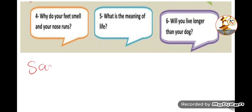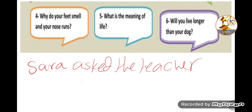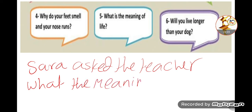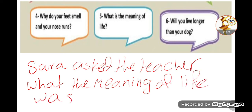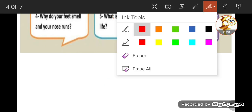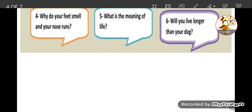Number five: 'What is the meaning of life?' Sarah asked the teacher. 'What' comes down as is. The auxiliary 'is' is dropped. The subject 'the meaning of life' is placed after 'what,' and 'is' — present tense — becomes 'was.' Result: 'Sarah asked the teacher what the meaning of life was.'